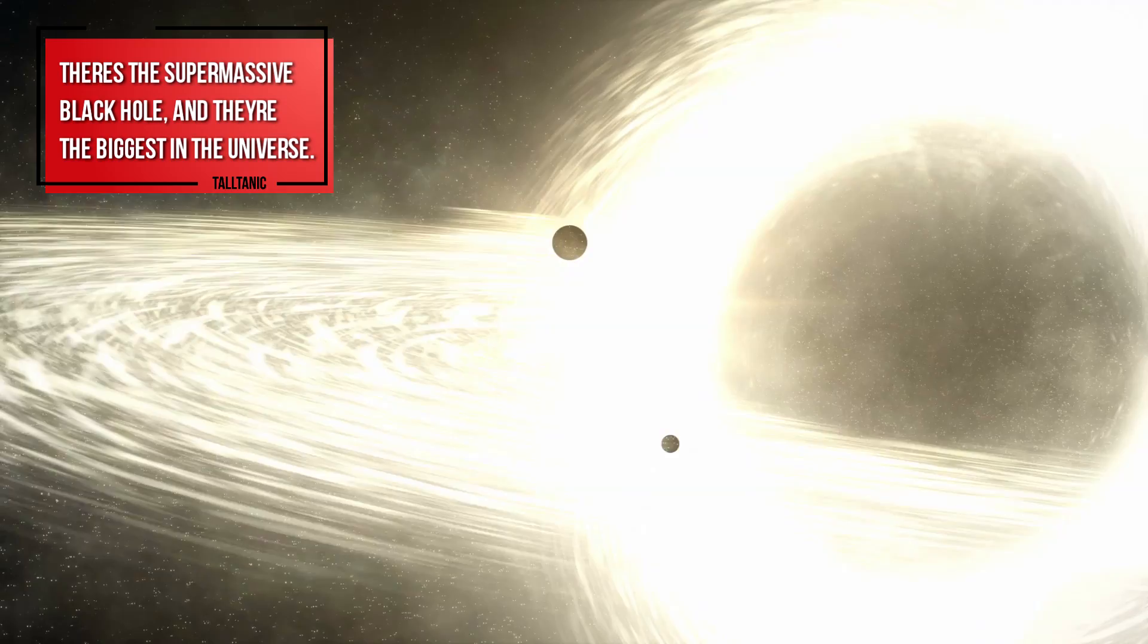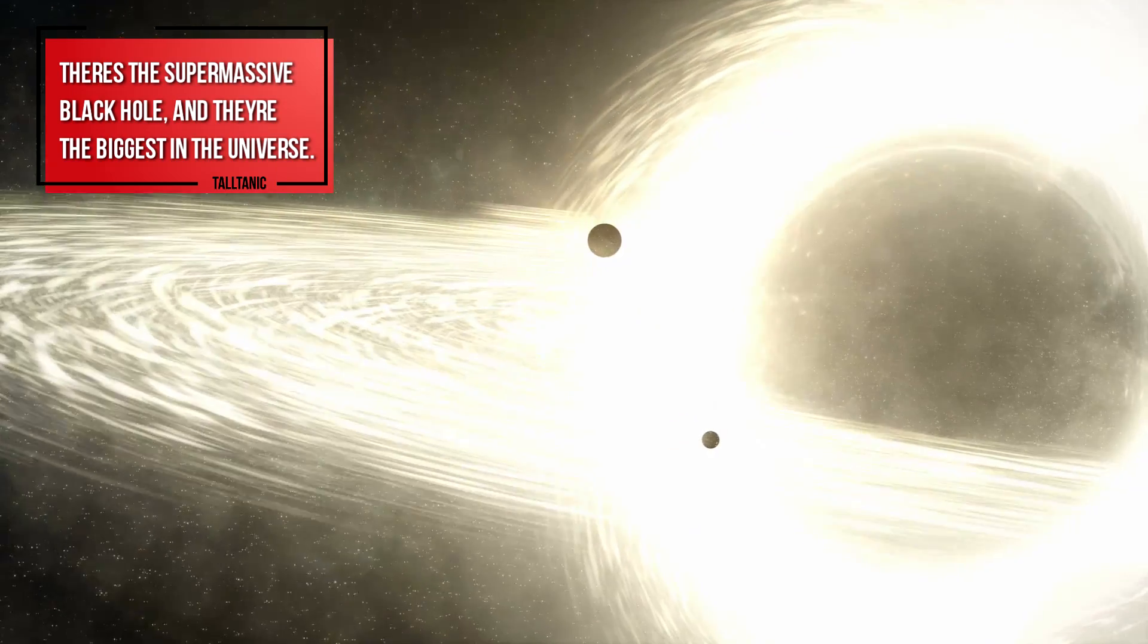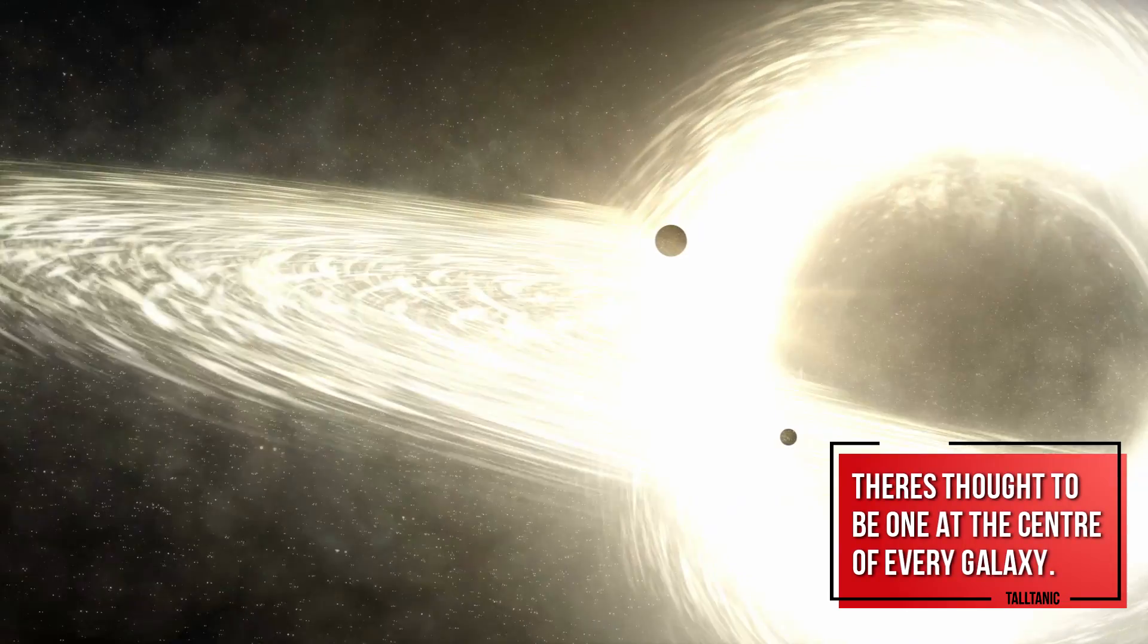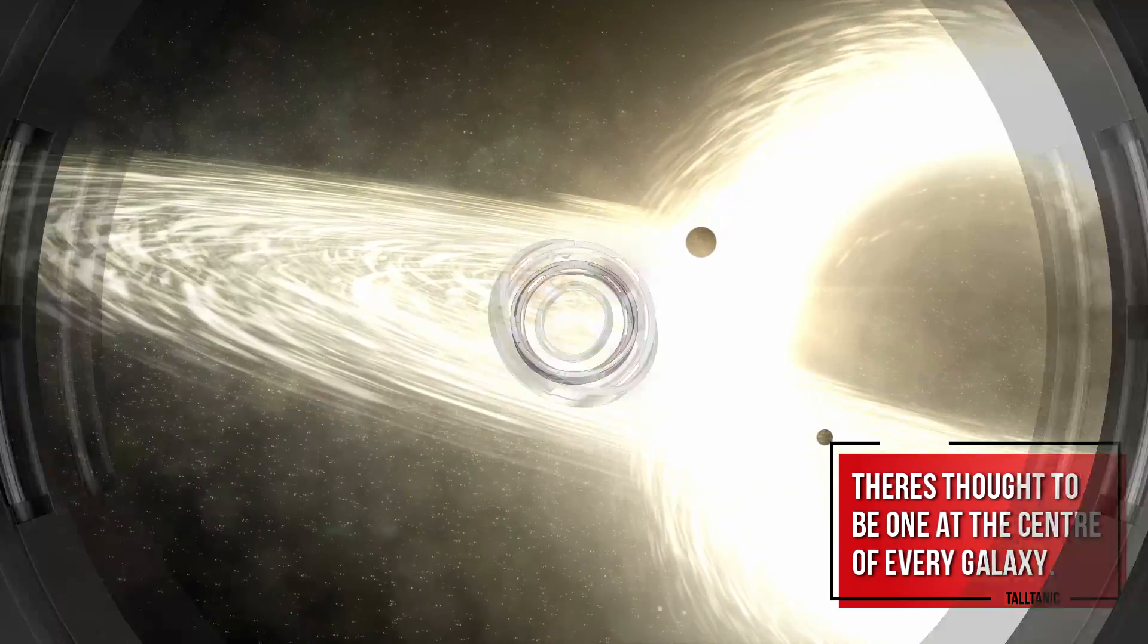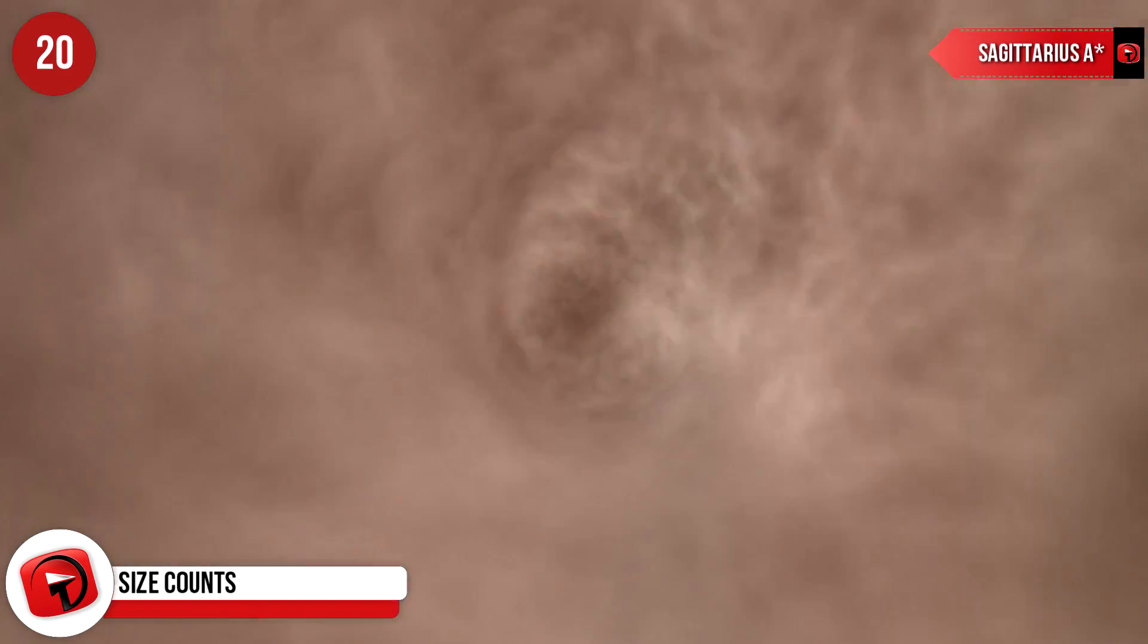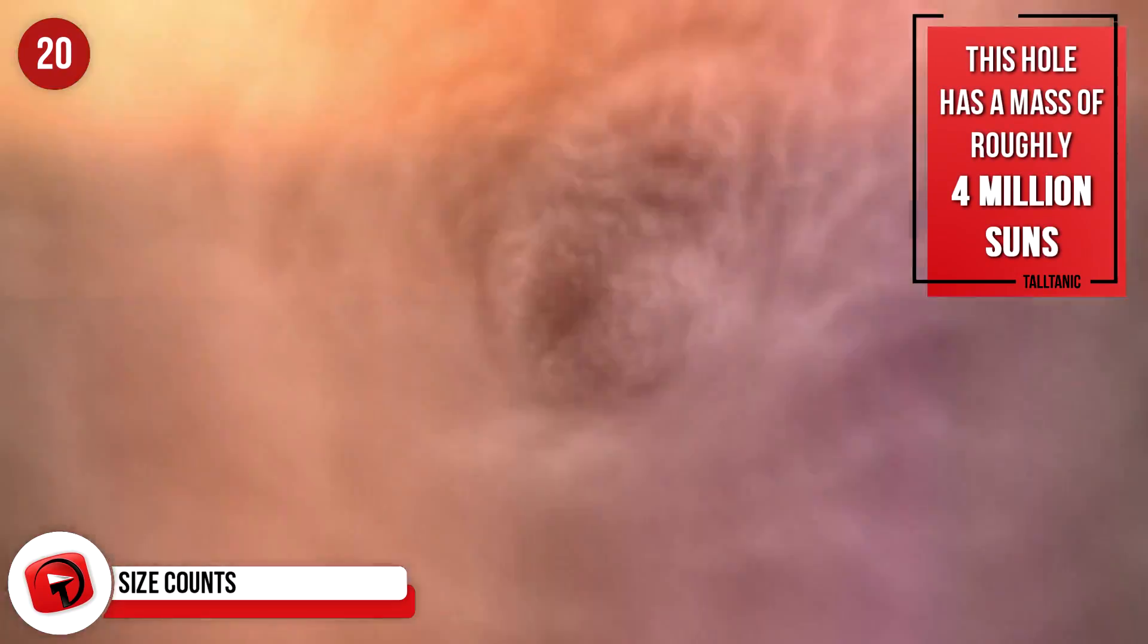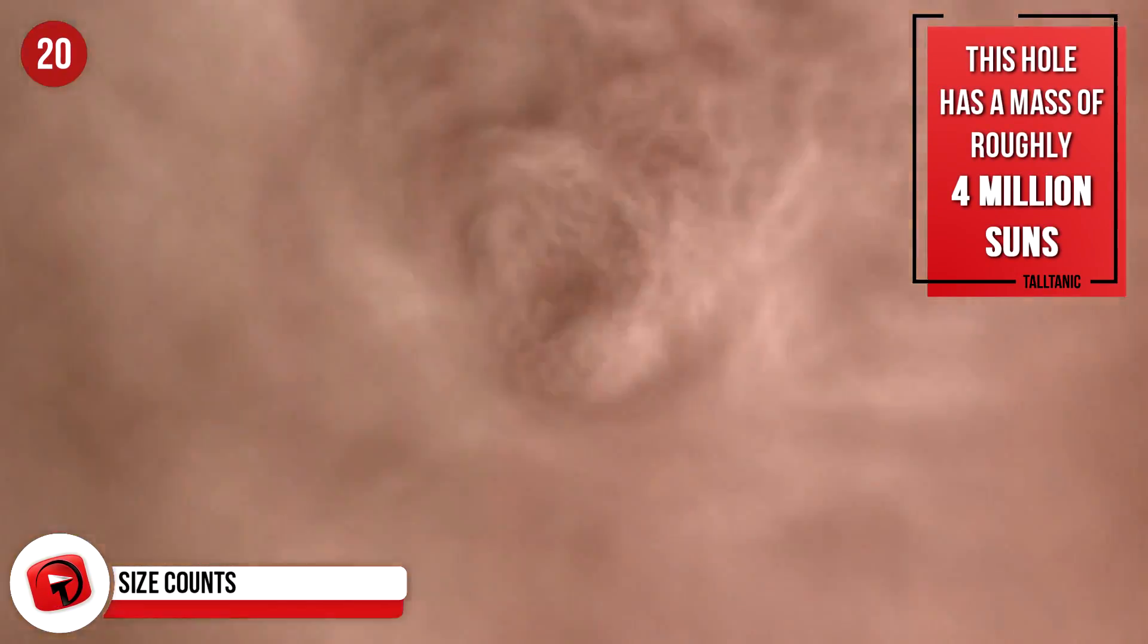Then there's the supermassive black hole, and they are the biggest in the universe. Some weigh billions of times more than the Sun. There's thought to be one at the center of every galaxy. Size Counts. One of the biggest black holes that we know of is Sagittarius A, the one that is believed to be at the center of the Milky Way. This hole has a mass of roughly 4 million suns.